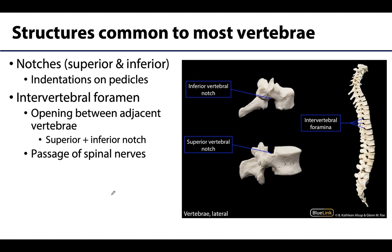Looking at a lateral view, there are indentations just above and below the pedicles referred to as vertebral notches — superior and inferior vertebral notches. When two adjacent vertebrae are placed together, these notches combine to form the intervertebral foramina. These are extremely important as the means by which spinal nerves exit from the spinal cord and travel through the vertebral column to reach their destinations.